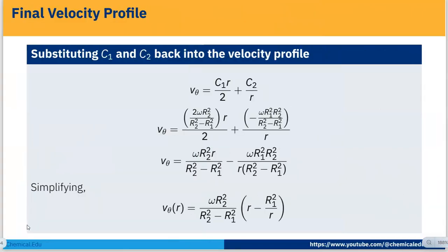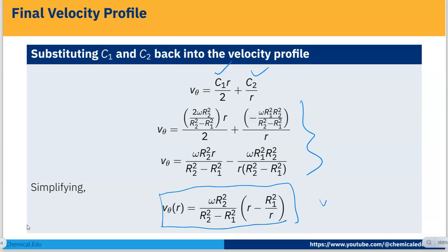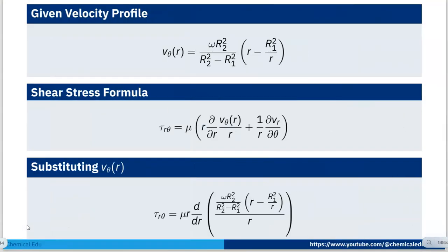The final velocity profile is: v_θ(r) = ω·R₂²/(R₂² − R₁²) · (r − R₁²/r). This is the expression for the liquid velocity profile between the two coaxial cylinders, where the inner cylinder is stationary and the outer cylinder rotates at angular speed ω.